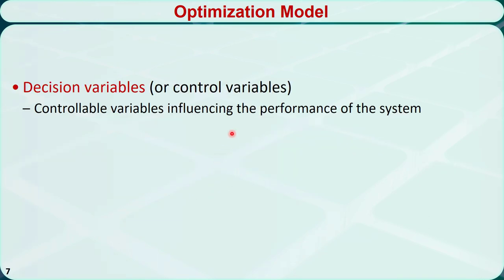Decision variables are also called control variables. They are variables that influence the performance of the system and must be controllable. For example, we can control the indoor temperature with an air conditioning system, so it can be used as the decision variable. But we cannot control the outside temperature, so it cannot be used as the decision variable.